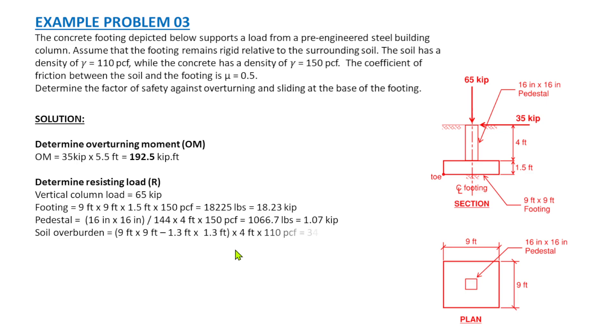The last one is the weight of the soil above the footing. The soil we need to account is from this point to that point which is 9 feet. So 9 feet times 9 feet minus 1.3 times 1.3. We deduct the area covered by the pedestal because we have accounted that already here. Then the net weight of soil is times 4 times the density of soil, 110 pounds per cubic foot. That would give us 34,896.4 pounds which is equal to 34.9 kips.